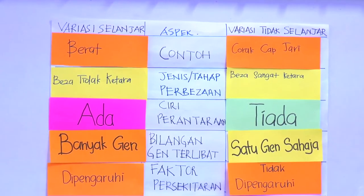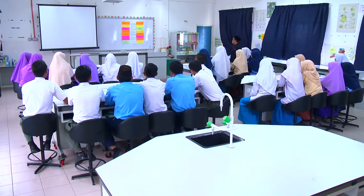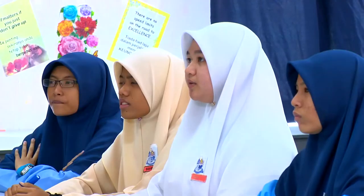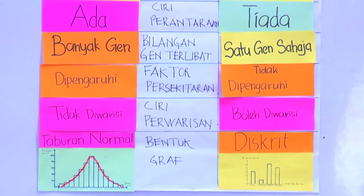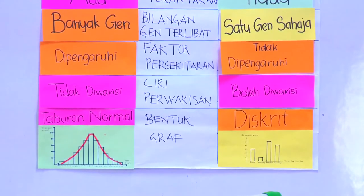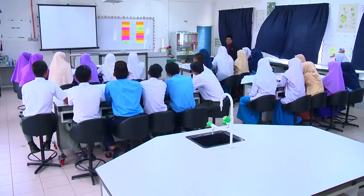Bagi aspek ciri perantaraan, variasi selanjar ada, manakala variasi tidak selanjar tiada. Variasi selanjar melibatkan banyak gen, manakala variasi tidak selanjar satu gen sahaja. Bagi faktor persekitaran, variasi selanjar dipengaruhi tetapi variasi tidak selanjar tidak dipengaruhi. Ciri perwarisan: variasi selanjar tidak diwarisi, manakala variasi tidak selanjar boleh diwarisi. Bentuk graf bagi variasi selanjar ialah taburan normal, dan variasi tidak selanjar adalah diskret.